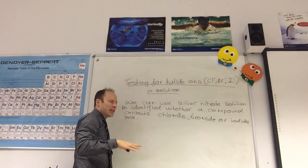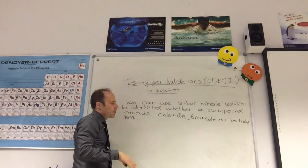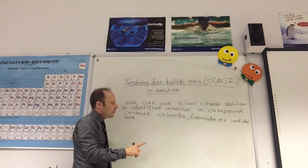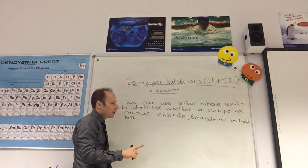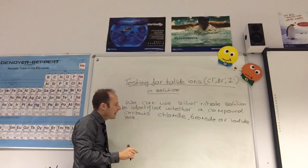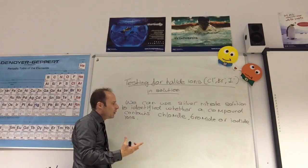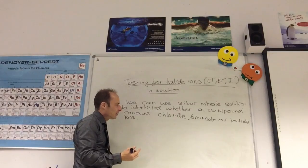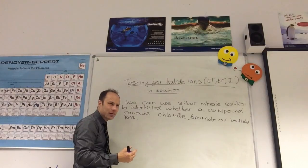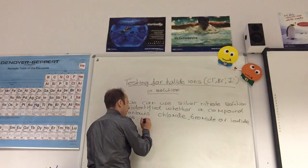Now, you get a precipitate and you can look at the colour. However, sometimes it's not clear. Can anyone remember what we then do? We've got a precipitate, we look at the colour, and then do you remember doing ammonia solution after that?